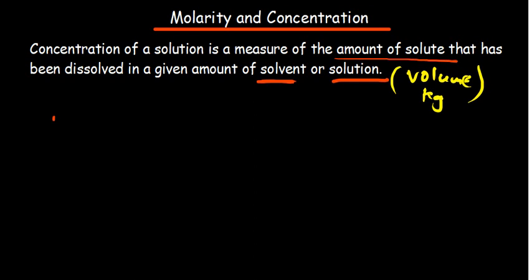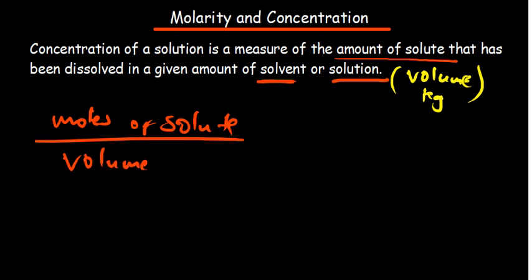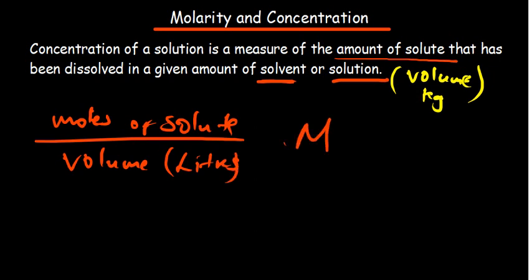So when you have number of moles of your solute divided by the volume in liters, this becomes a special kind of concentration we are calling molar concentration, denoted by capital letter M. So concentration is something general. Molarity specifies the units, moles per liter. And that is basically what the difference is.